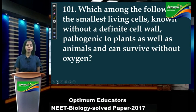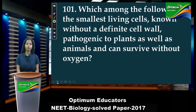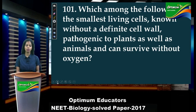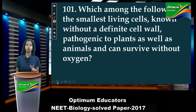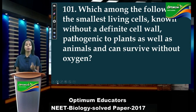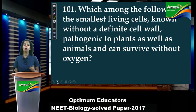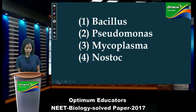Next: 'Which among the following is the smallest living cell known, without a definite cell wall, pathogenic to plants as well as animals, and can survive without oxygen?' Three conditions: no cell wall, pathogenic to plants and animals, and can survive without oxygen. The only organism with all three features is mycoplasma. That is option 3.